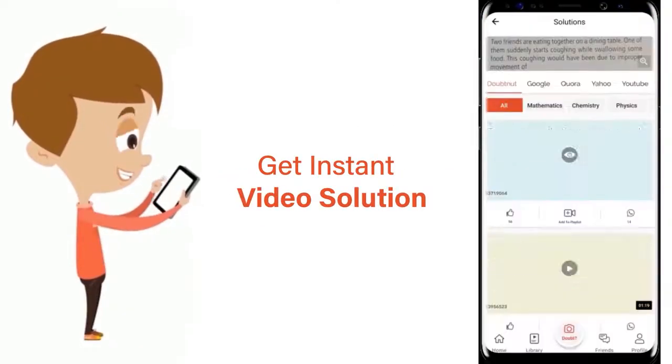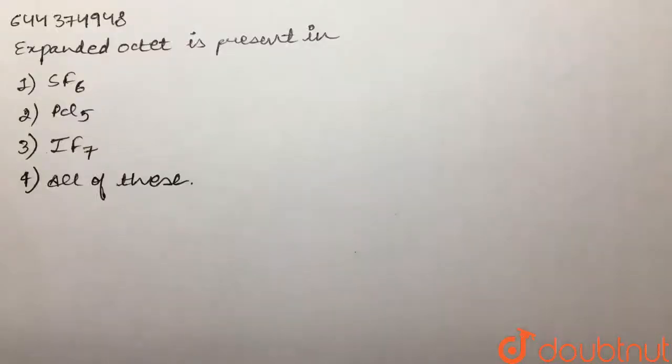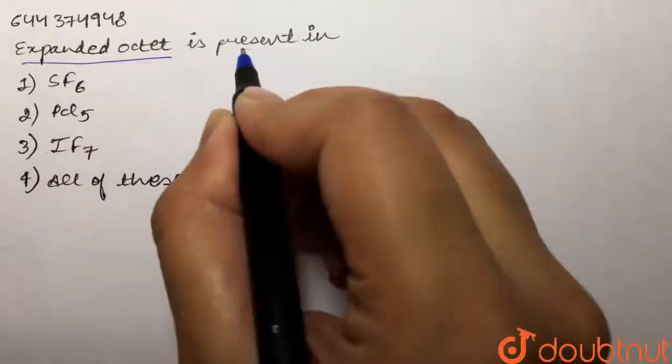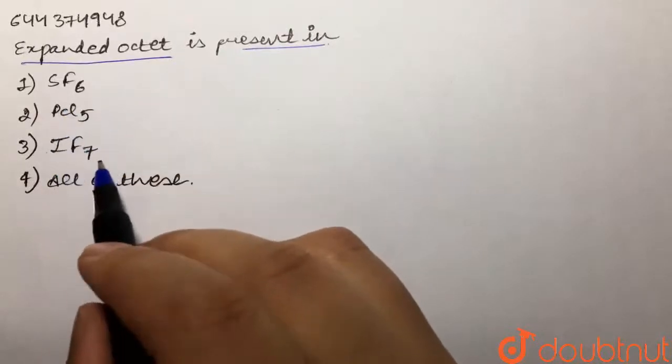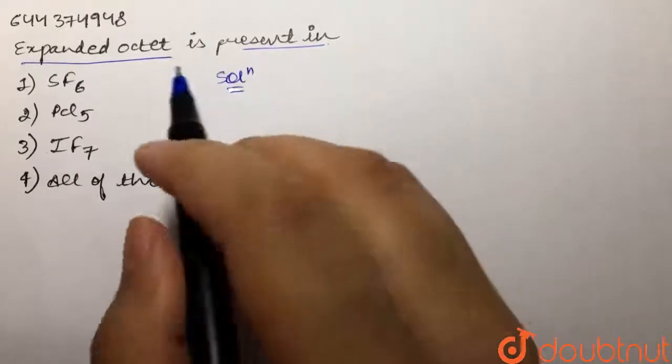Get instant video solutions to all your math, physics, chemistry and biology doubts. Just click the image of the question, crop the question and get instant video solution. Our question is: expanded octet is present in SF6, PCl5, IF7, or all of these. We are supposed to tell that expanded octet is present in which case.